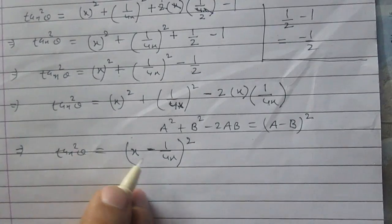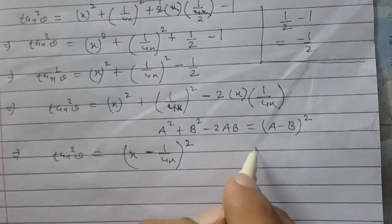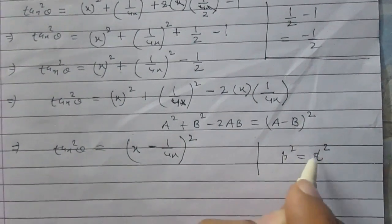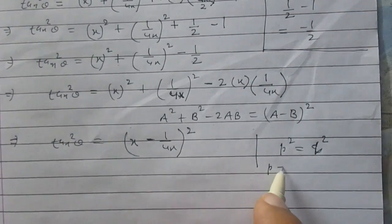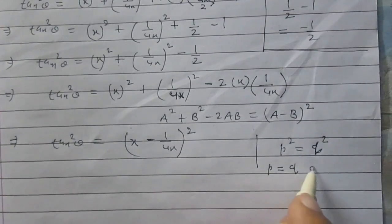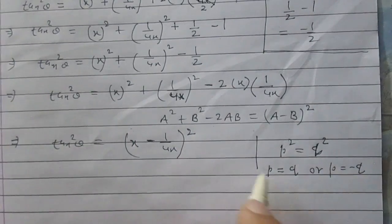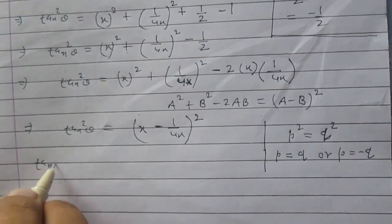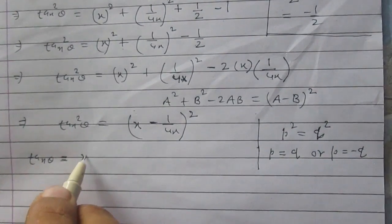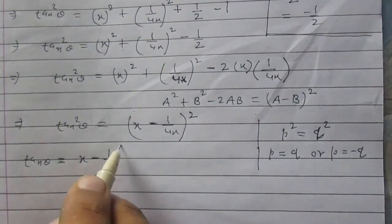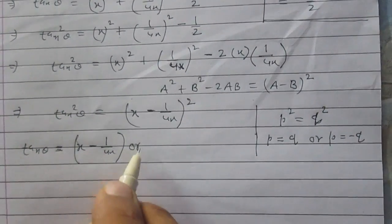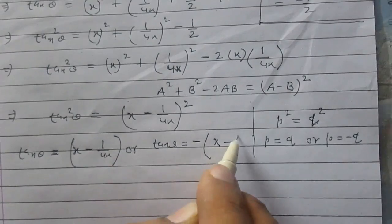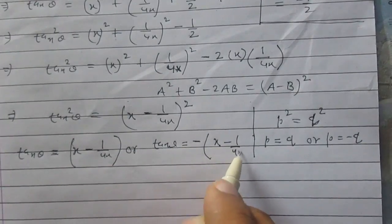Since tan² θ equals x minus 1 upon 4x, whole square, and we know that if p² equals q² then either p equals q or p equals minus q, we can write: tan θ equals x minus 1 upon 4x, or tan θ equals minus of x minus 1 upon 4x. So we have two results for tan θ.